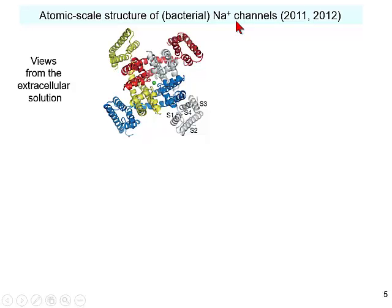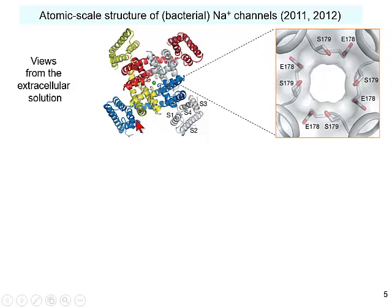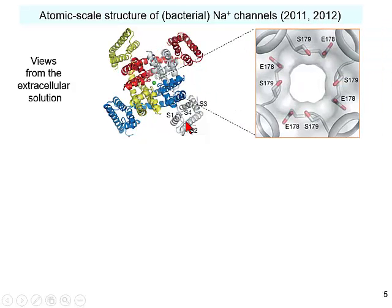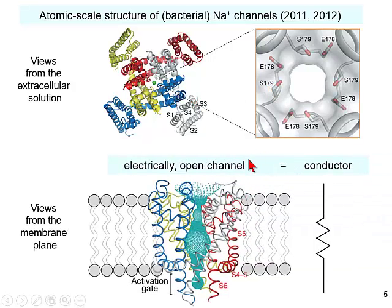The key point for today, absolutely, is that an open channel acts electrically like a conductor. This is not perfect because the concentration of ions on the inside and the outside of the cell differs — there's more sodium on the outside, less on the inside. So it's not a perfectly linear resistor; it acts a bit like a diode and rectifies a little bit. But on the whole, we find it very convenient to talk about the open channel as a conductor.